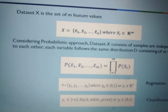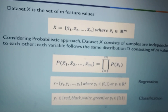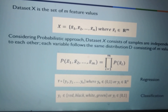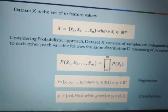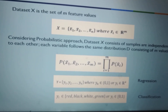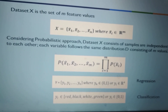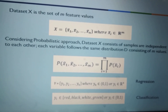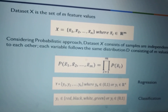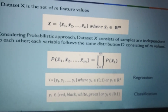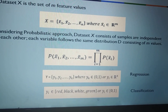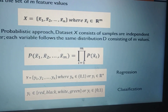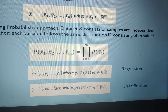By considering the probabilistic approach, dataset X consists of samples that are independent of each other — all records or samples are independent. For example, if the dataset is of students, all the students are independent of each other. It doesn't happen that if one student's values are increasing, another student's values will be affected. Also, each variable follows the same distribution D consisting of m values, so each attribute column follows the same type of probability distribution.